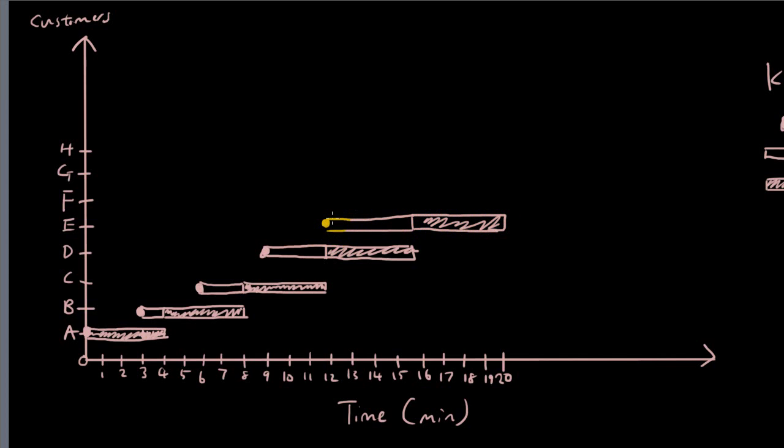And then customer F arrives at 15. Customer E is still waiting and customer F has to wait all the way till customer E is done. During this point in time, between the time is 15 till the time is 16, there were two people in the queue, as you can see in this section. In this section here, between time is 15 and time is 16, D was being served, E and F are both still waiting in the queue.